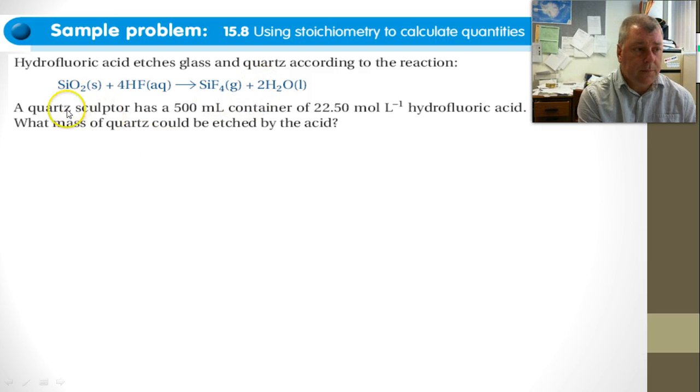Now what are we given? A quartz sculpture has a 500 milliliter container of 22.5 moles per liter hydrofluoric acid. What mass of quartz would be etched if the sculpture used all this acid? So there's our known. Our known is the acid. And our unknown is how much quartz is going to be etched by it.